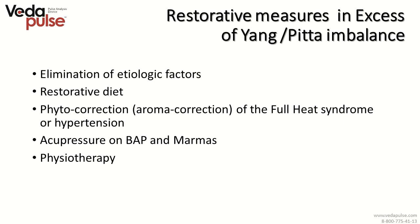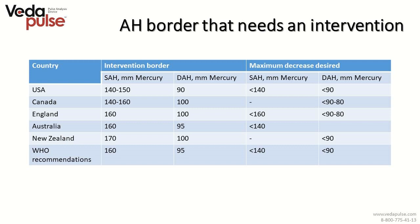Restorative measures in the axis of Yang or Pitta imbalance from the point of view of Ayurveda, traditional Chinese medicine, and modern medicine should include elimination of etiologic factors, restorative diet, phytocorrection or aromatherapy, acupressure of biologically active points and marmas, and physiotherapy. According to standards of different countries, there is a certain border of hypertension level considered a starting point for treatment. Treatment should not wait until slightly increased hypertension rises to 160/95 or 160/100; it is always better to start preventive measures before it is too late.